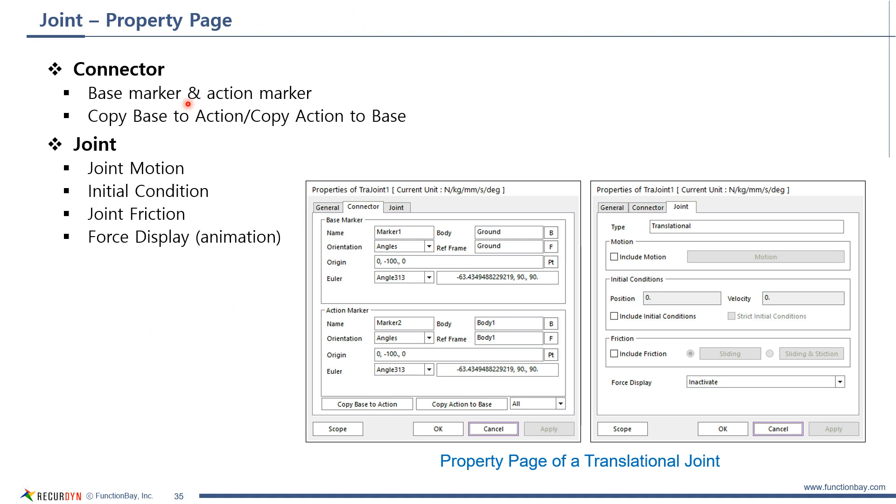Property page of a joint can be different according to the joint type. This image shows the property page of a translational joint. Connector tab shows the base marker and action marker. You can easily change their name, origins, or orientations.